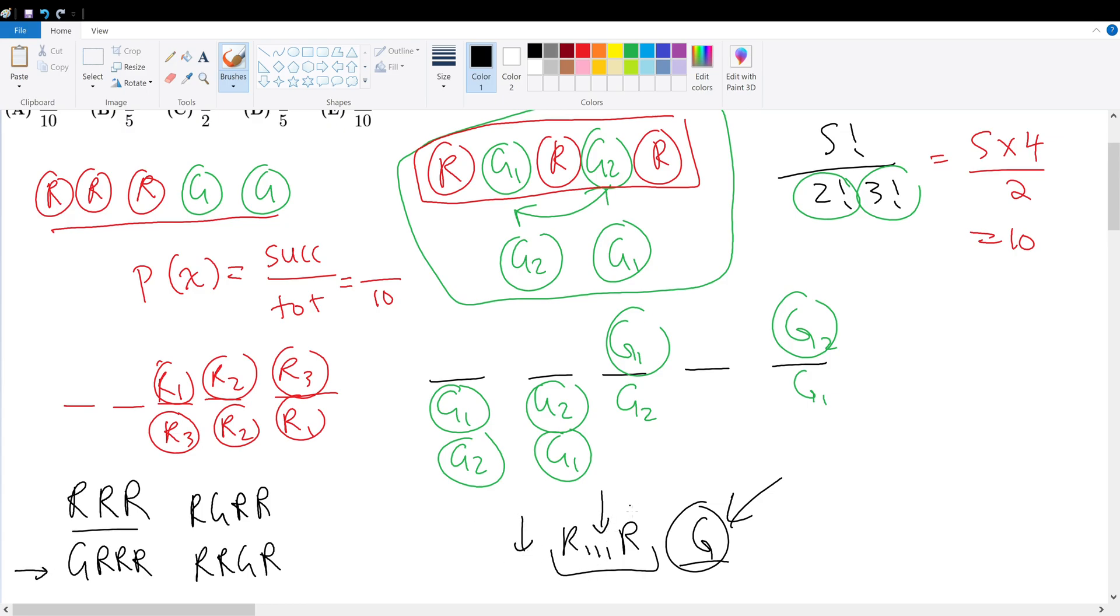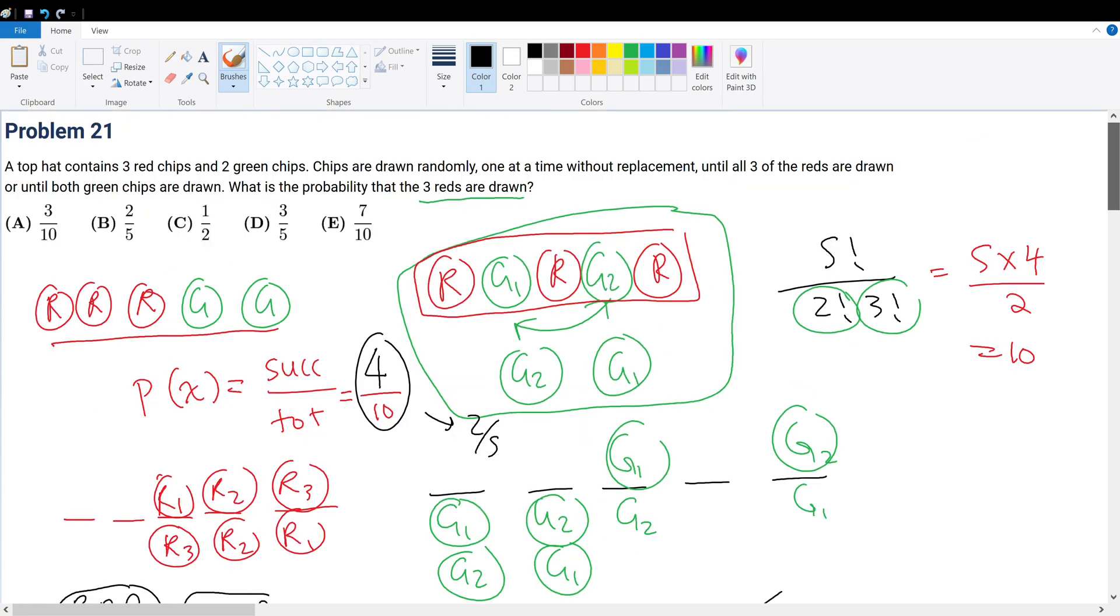So that means the green must either happen in between the series of R's or before it. So we have this case to represent where the green happens before all the reds are drawn. And we have the cases where the greens are selected in the midst of drawing all the red cards. And then we have this case right here to represent the case that no green chips are drawn. So we have four total successes, so therefore we have 4 over 10. That reduces to 2 over 5. And therefore, your final answer will be answer choice B.